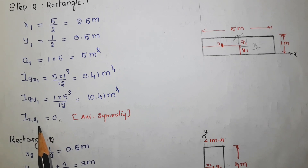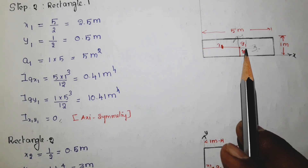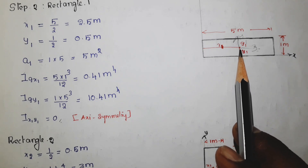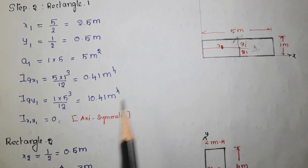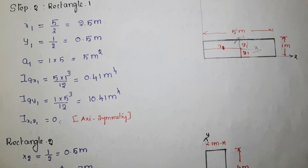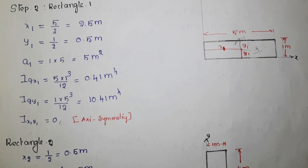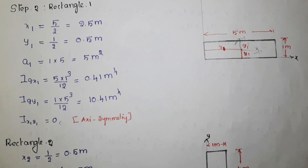The product moment of inertia with respect to these two axes is 0 because the section is axis-symmetric. It is a property of the product moment of inertia: when the given section is an axis-symmetrical one, the value will be 0. So according to that, here the value is 0.